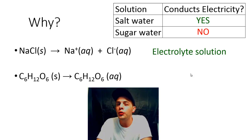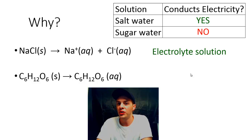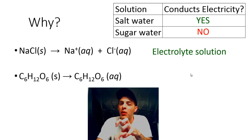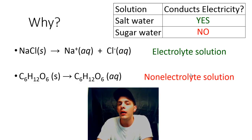On the other hand, when we dissolved glucose in water — that's the C6H12O6 — it didn't make ions in solution. It just went from solid glucose to aqueous glucose. It dissolved in the water for sure, however those glucose molecules remained intact; they didn't break apart and they didn't make any ions.